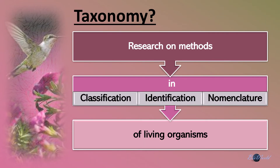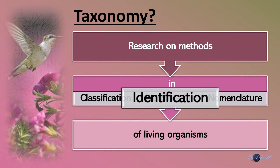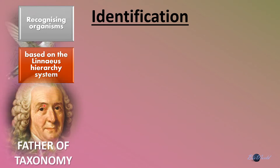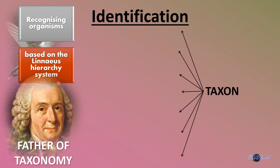Let's move on to the second keyword, that is identification. Once we are done with classification, we shall then have to carry out identification — that is, to recognize the organisms based on the Linnaeus hierarchy system. The Linnaeus hierarchy system was introduced by the father of taxonomy, Carolus Linnaeus. According to the hierarchy system, there are altogether seven taxons.